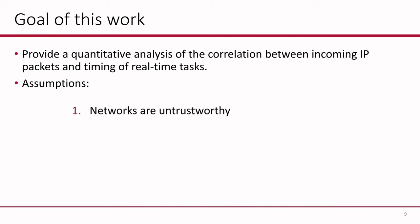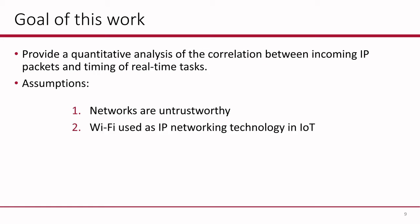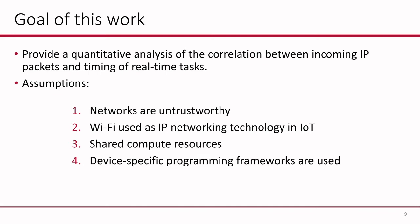We made a few assumptions for this. Firstly, we say that networks are untrustworthy, especially in the Internet of Things. Secondly, we use Wi-Fi as the main networking technology, since many IoT devices right now also use Wi-Fi. Thirdly, we say that the compute resources on these devices are shared — networking and critical tasks share the same hardware resources, which is very important. And lastly, for the devices we looked at, there are device-specific programming frameworks which we also used, mainly because using the Wi-Fi driver and networking software was not possible without them.